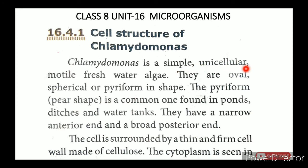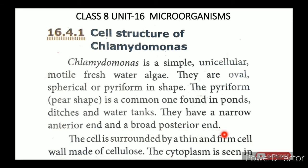Chlamydomonas is a simple unicellular, motile freshwater alga. They are oval, spherical, or piriform in shape. The piriform (pear-shaped) form is commonly found in ponds, ditches, and water tanks. The anterior end is narrow and the posterior end is broad. They have a narrow anterior end and a broad posterior end.